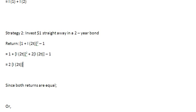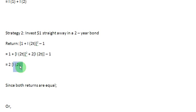So from strategy number 2, my return is simply equal to 2 times the long-term interest rate. I2T is a long-term interest rate — it is a 2-year interest rate. So twice the amount of the long-term interest rate is going to be my return from strategy 2.